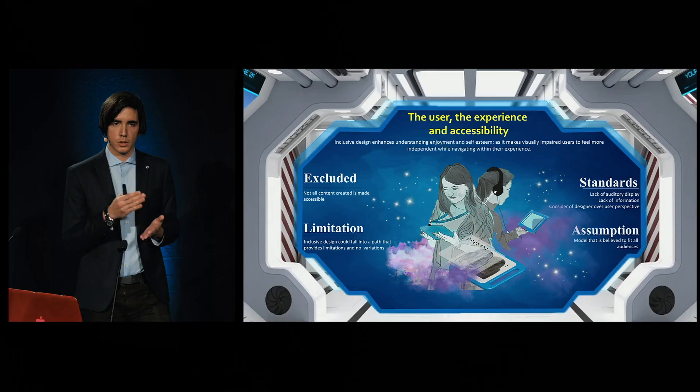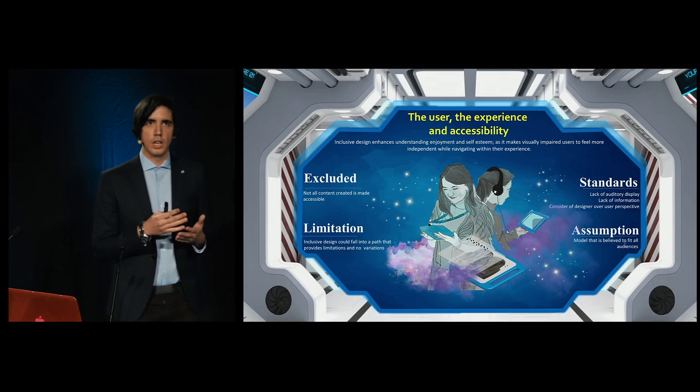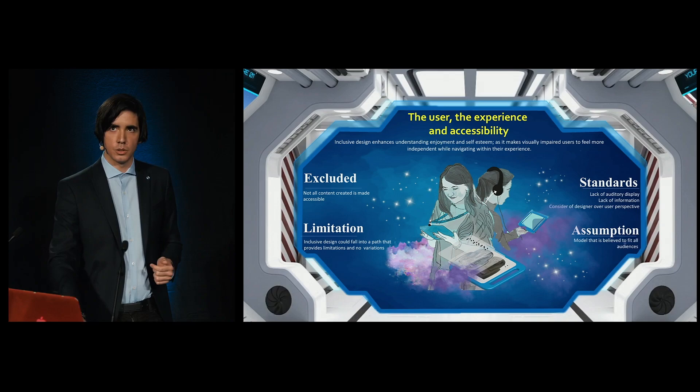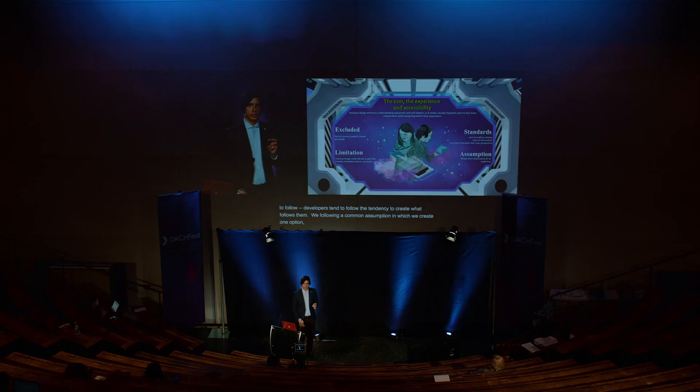Developers tend to follow the tendency to create accessible content that follows their own intuition rather than the user's perspective. By doing that, we are following a common assumption in which we create only one option for people who have visual impairment, resulting in them not having as many variations as possible. And by doing that, we encourage the three main inconveniences among accessibility for audiovisual mediums: the lack of variation, the obscuring of the soundtrack, and the content limitation.